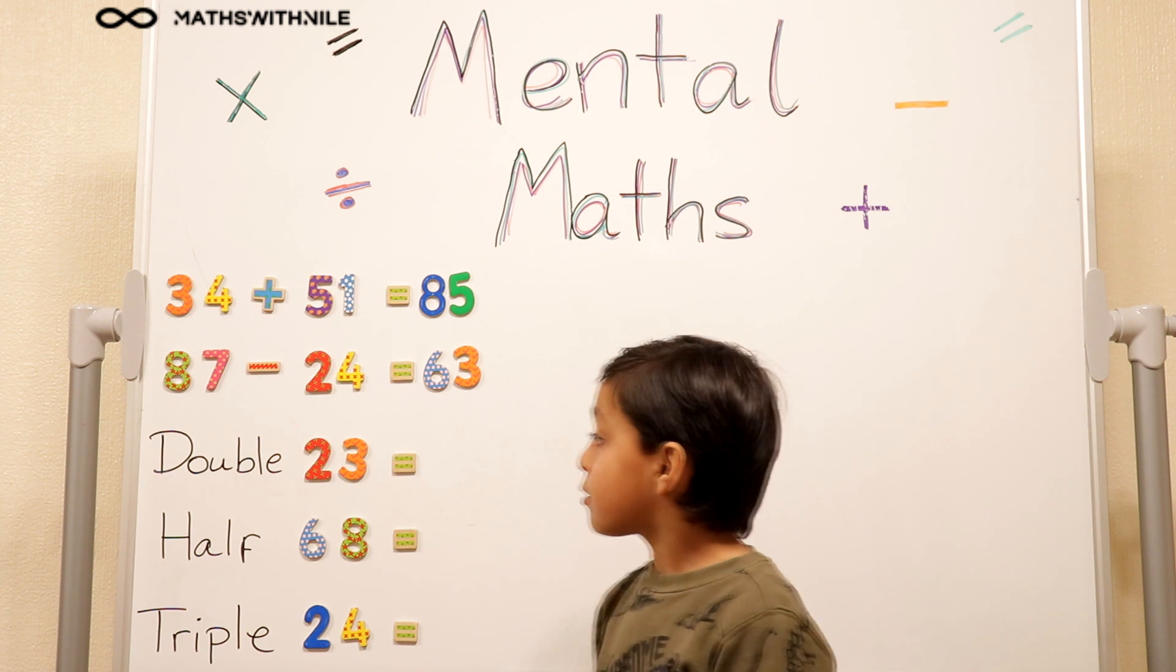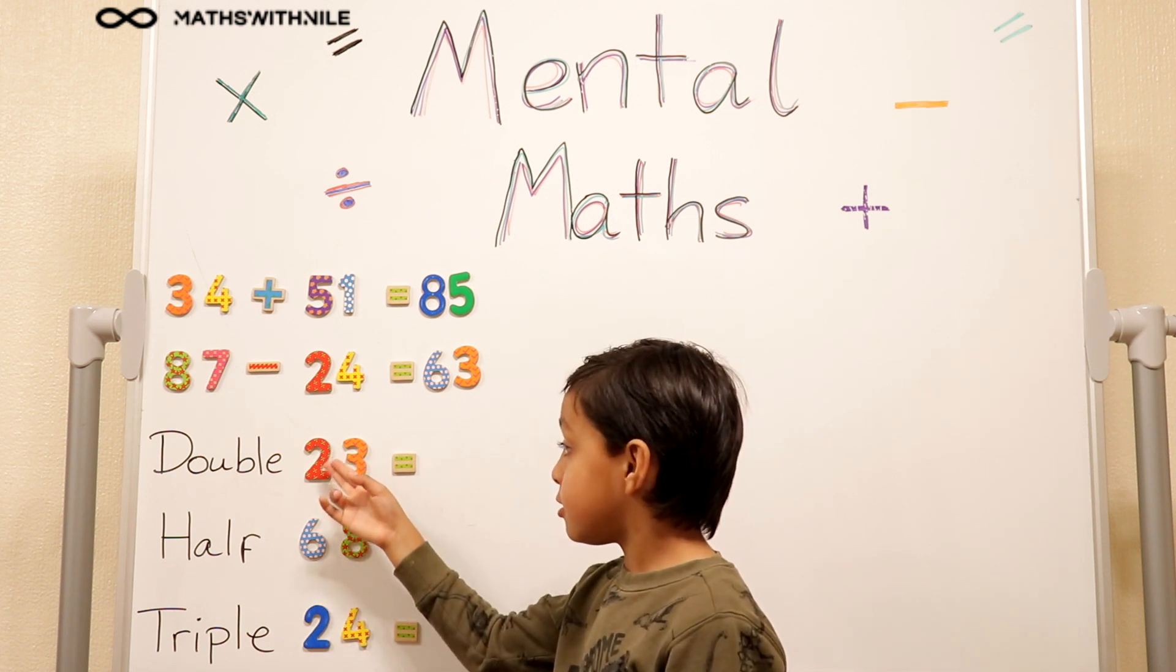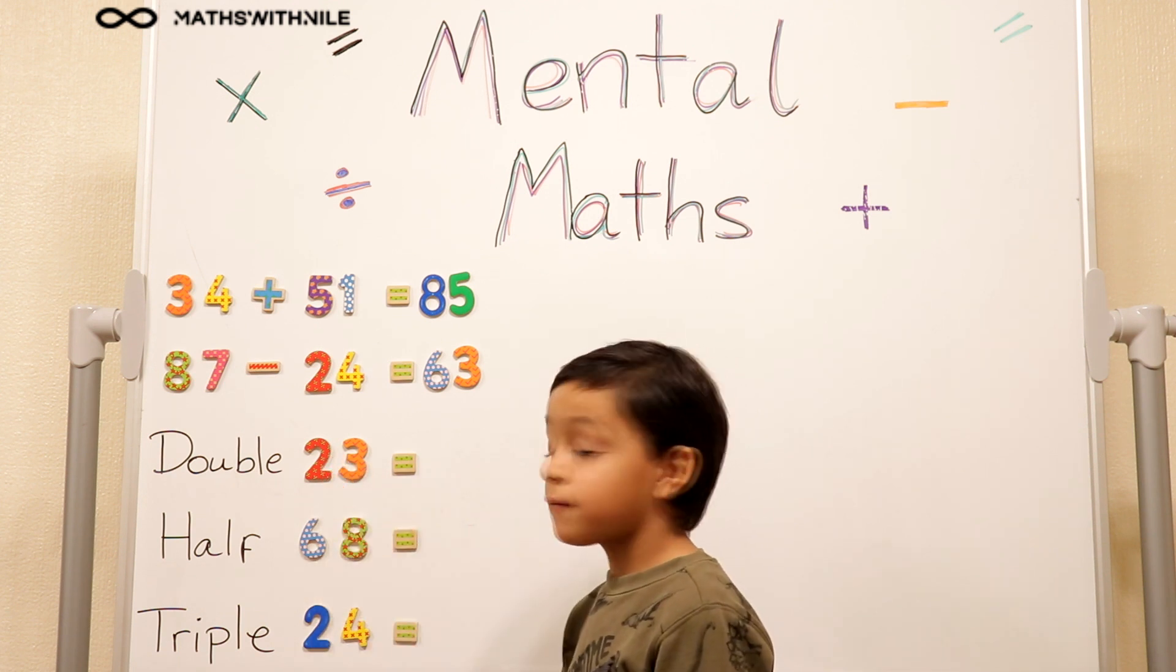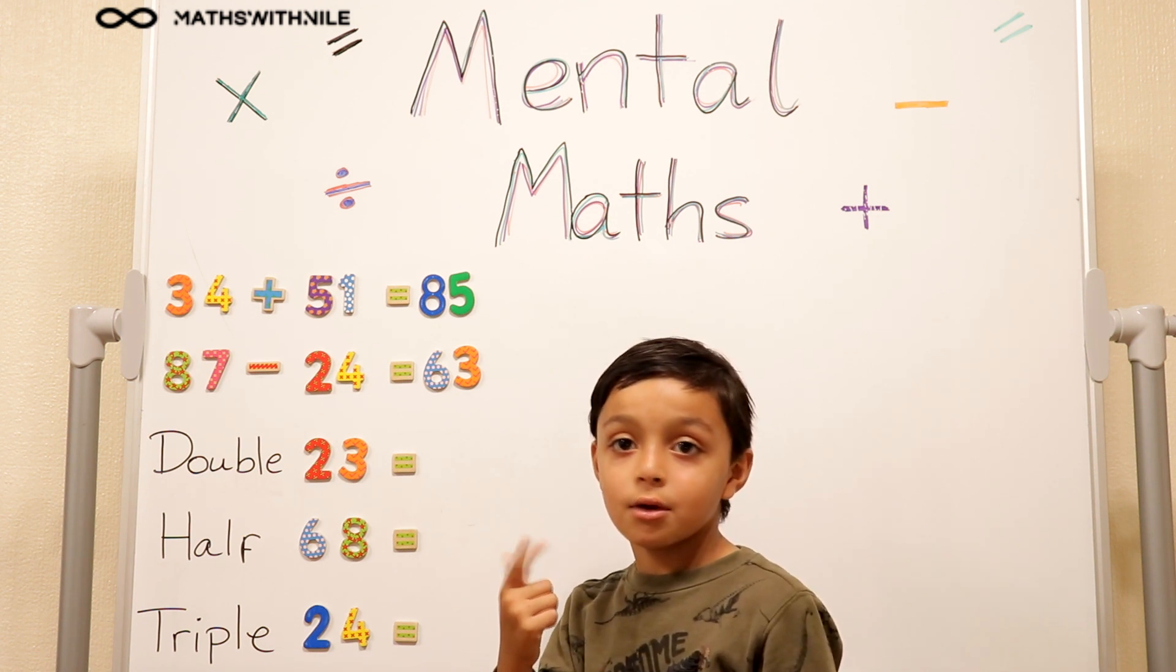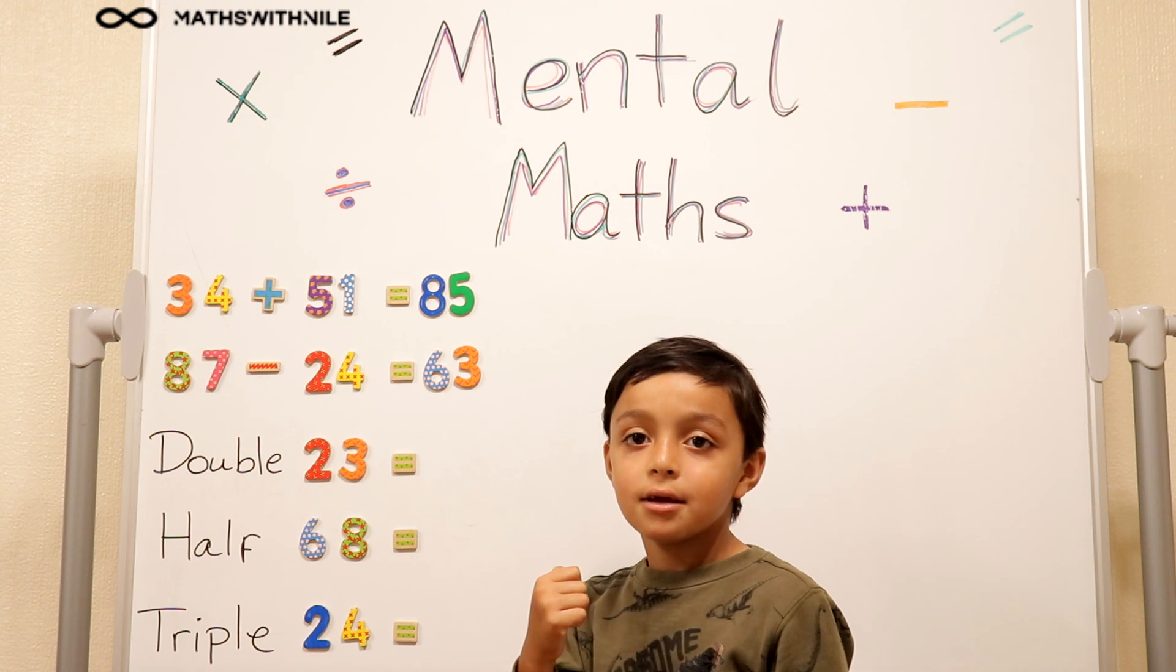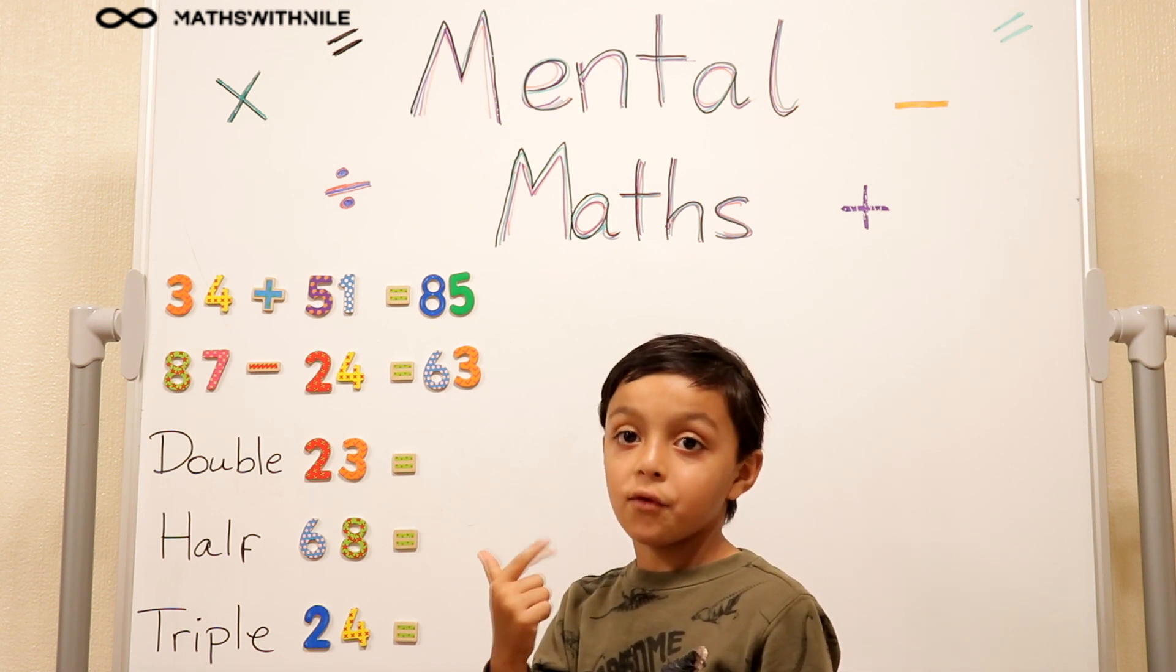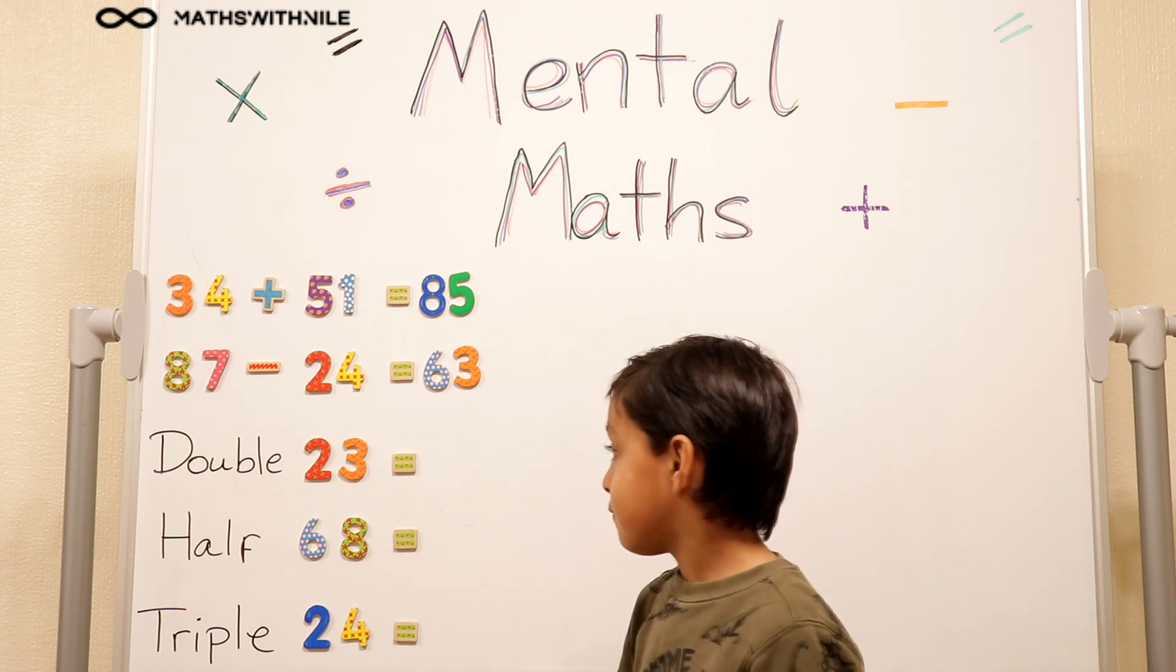So calculate it. So double 20 equals 40 because 20, 21, 22. Well, we don't have to count it in ones. 30, 40. Okay, so double 20 is 40.